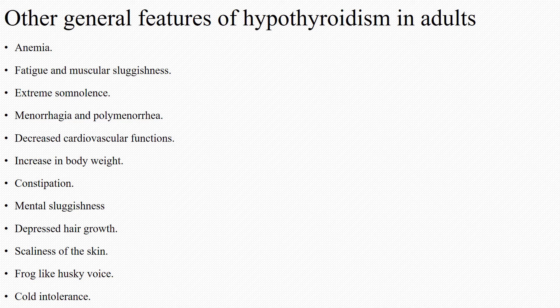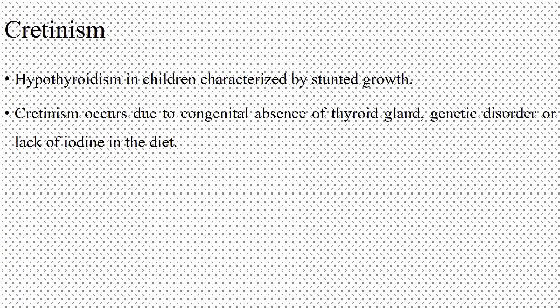Other general features of hypothyroidism in adults include anemia, fatigue and muscular sluggishness, extreme somnolence with sleeping up to 14 to 16 hours per day, menorrhagia and polymenorrhea (abnormality in menstrual flow), decreased cardiovascular functions such as reduction in rate and force of heart contraction, cardiac output and blood volume, increase in body weight, constipation, mental sluggishness, depressed hair growth, scaliness of the skin, frog-like husky voice, and cold intolerance.